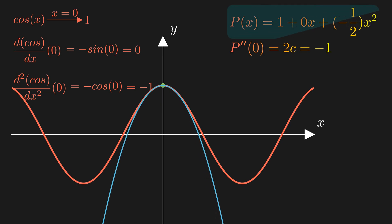Here is the polynomial we were looking for, 1 plus 0x minus 1 half x squared. It doesn't look much like cosine, does it? But to see how well this polynomial approximates cosine, suppose you want to compute cosine of 0.1, using this polynomial, it gives you 0.995.